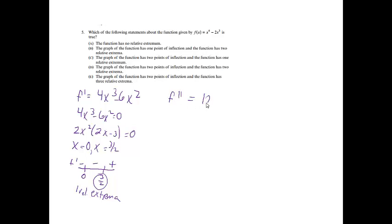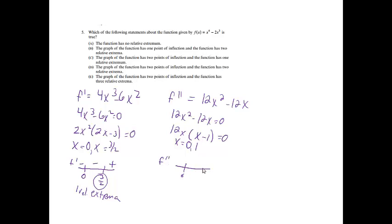Now f''(x) = 12x² − 12x = 12x(x − 1) = 0, giving critical numbers x = 0 and x = 1. Testing the f'' chart: positive for x < 0, negative between 0 and 1, and positive for x > 1. Since f'' changes sign in two places, there are two points of inflection. So the answer with two points of inflection and one relative extremum is choice C.